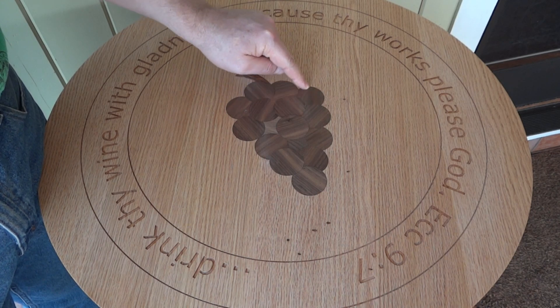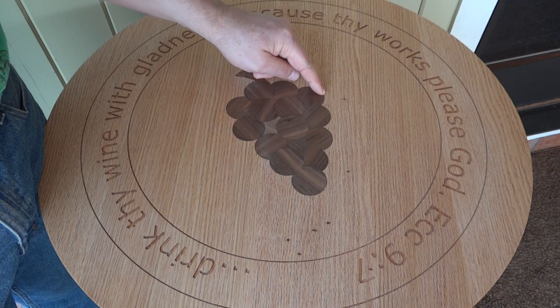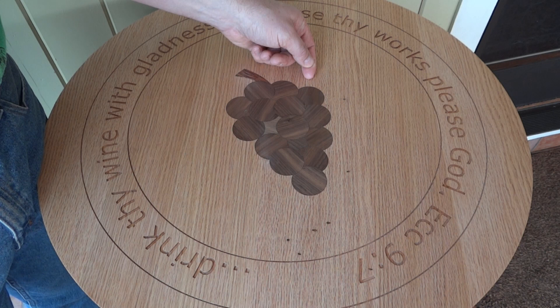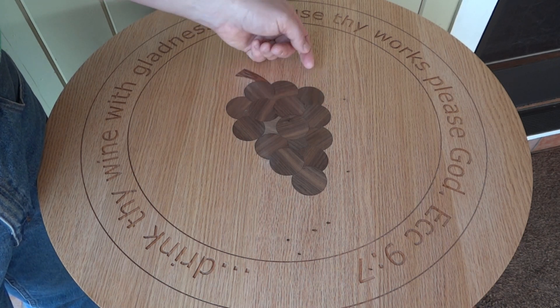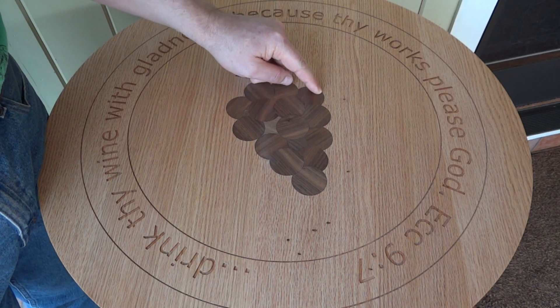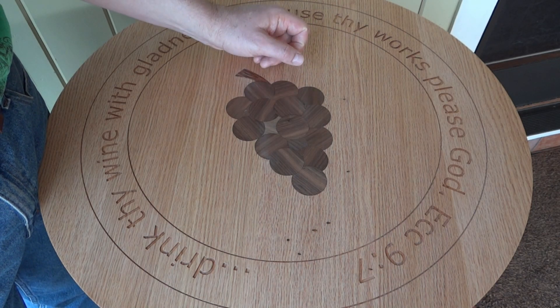The circles were cut as a pocket and then the inlay was cut with the same circle but a five-thousandths tolerance, which they fit just perfectly in there. They just slipped right in.